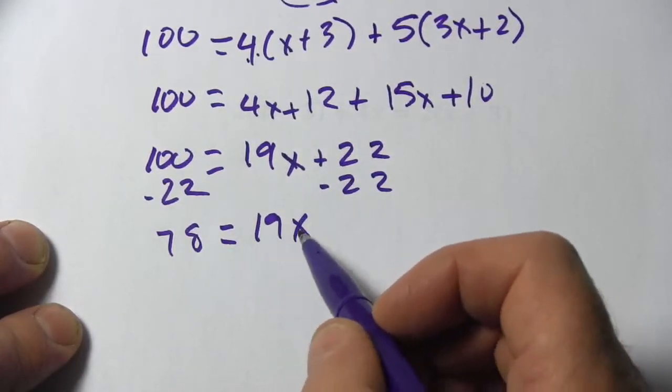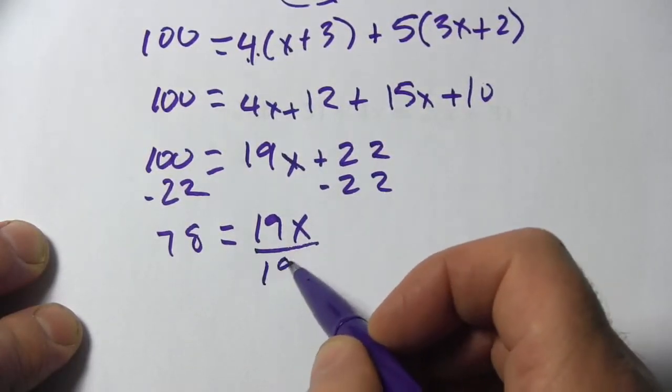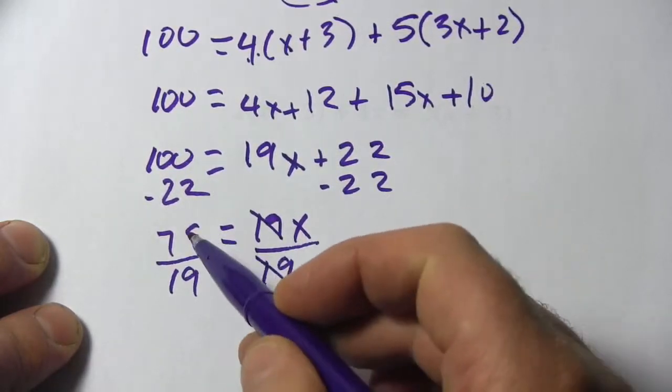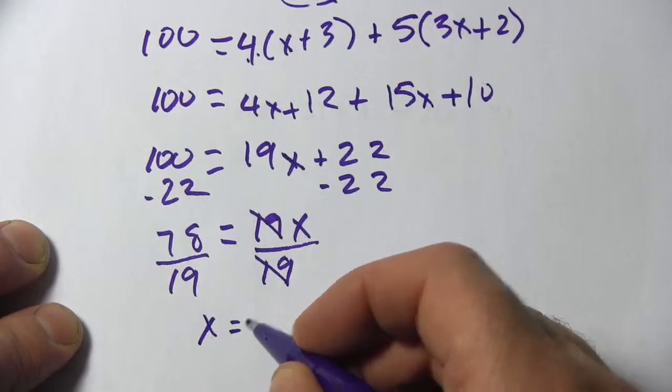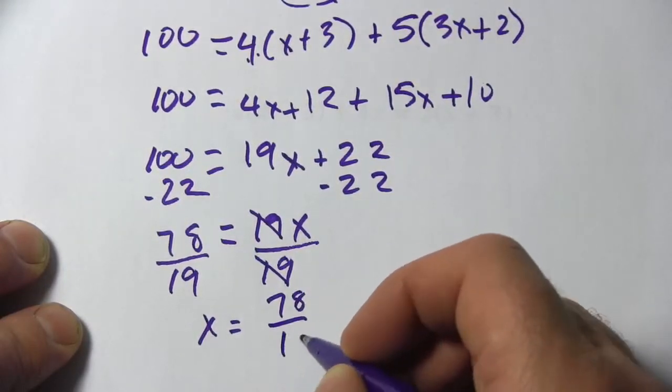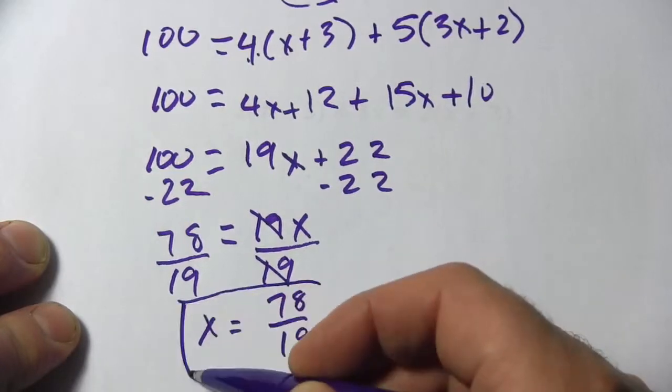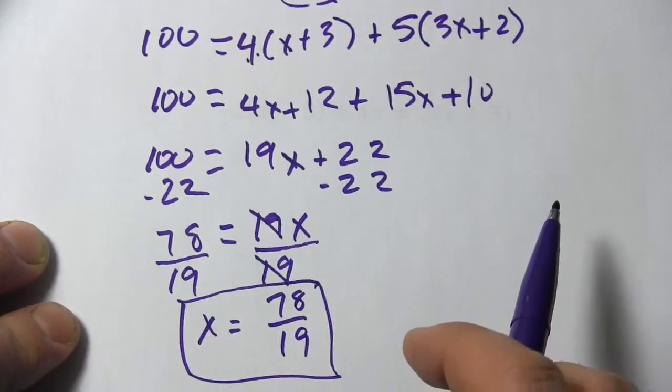And now the last step, 19 is multiplied by x. We want to undo that by dividing by 19. Here, the 19s cancel. And we get x equals 78 over 19. And I think that's probably the lowest possible terms because 19 is a prime number here and 78 is not a multiple of 19.